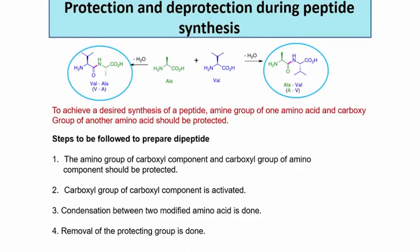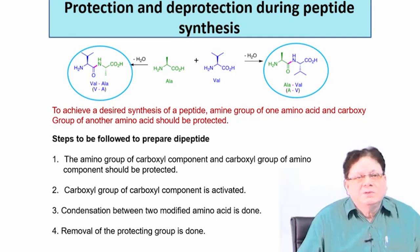Let us continue with the topic that we had been discussing earlier, that was on the synthesis of peptide molecules. We have done the sequencing - how to know the primary structure, that is how the amino acids are arranged one after another - and then we started the reversal of that, that is how can we make a designed peptide with a particular amino acid at a specified position.